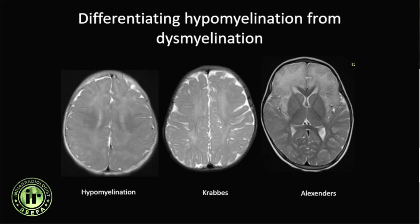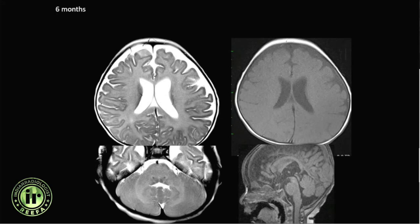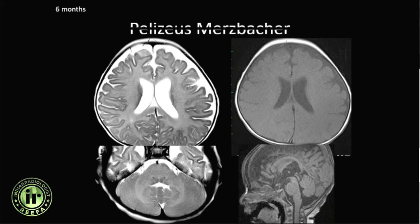In a six-month-old patient, there is hardly any myelination seen on T1-weighted images — not even in the dorsal brainstem or cerebellar hemispheres — and white matter is diffusely hyperintense on T2-weighted images. For a six-month-old, this represents delayed myelination. This patient was diagnosed with Pelizaeus-Merzbacher syndrome.